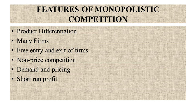The second feature is many firms. The market structure of monopolistic competition involves a large number of firms, each producing a differentiated product. This means that no single firm has a significant market share, and each firm's actions have limited impact on the overall market.